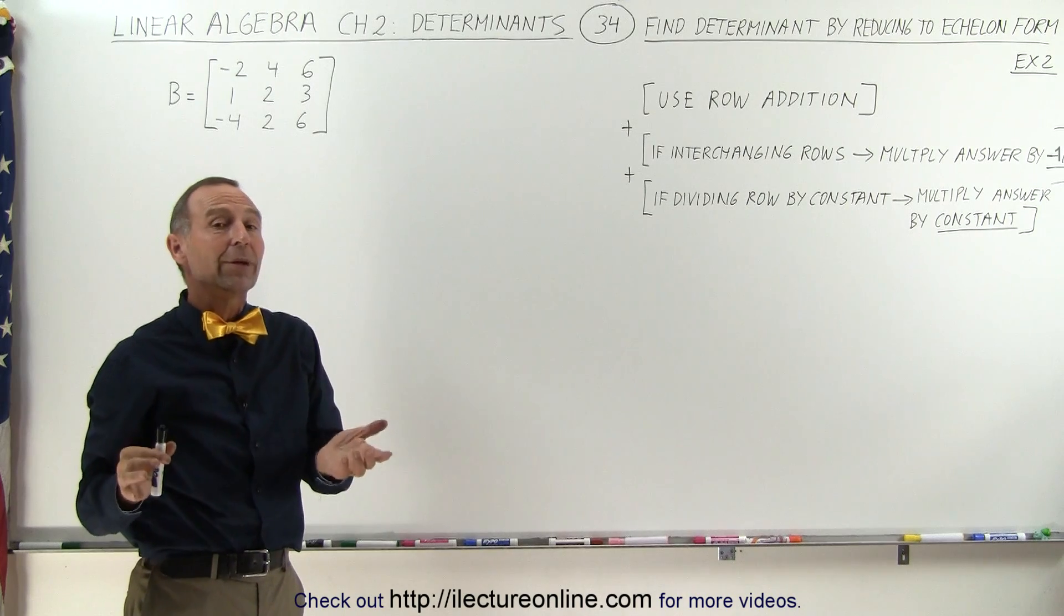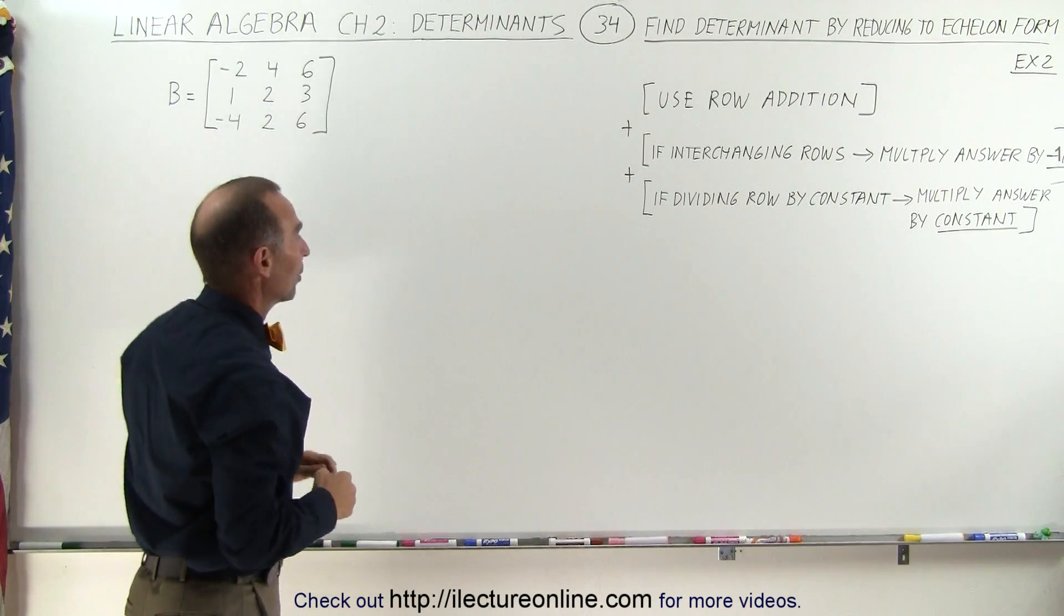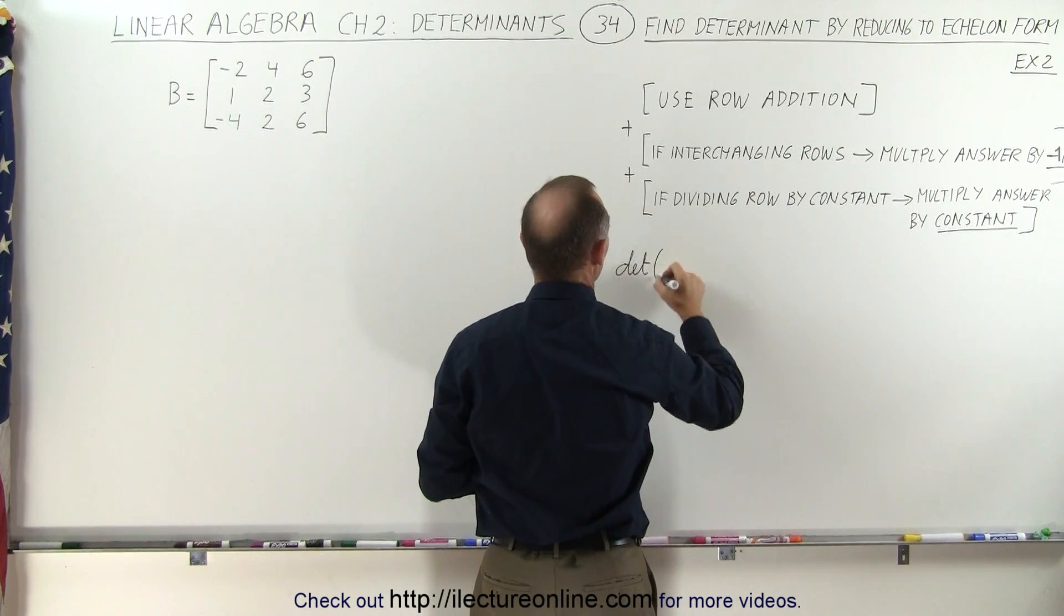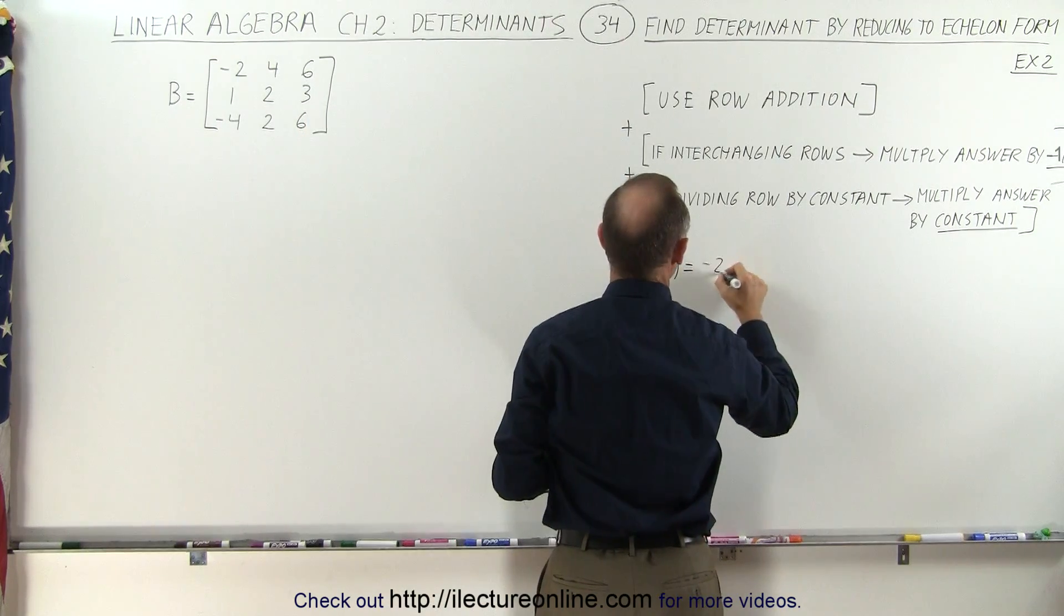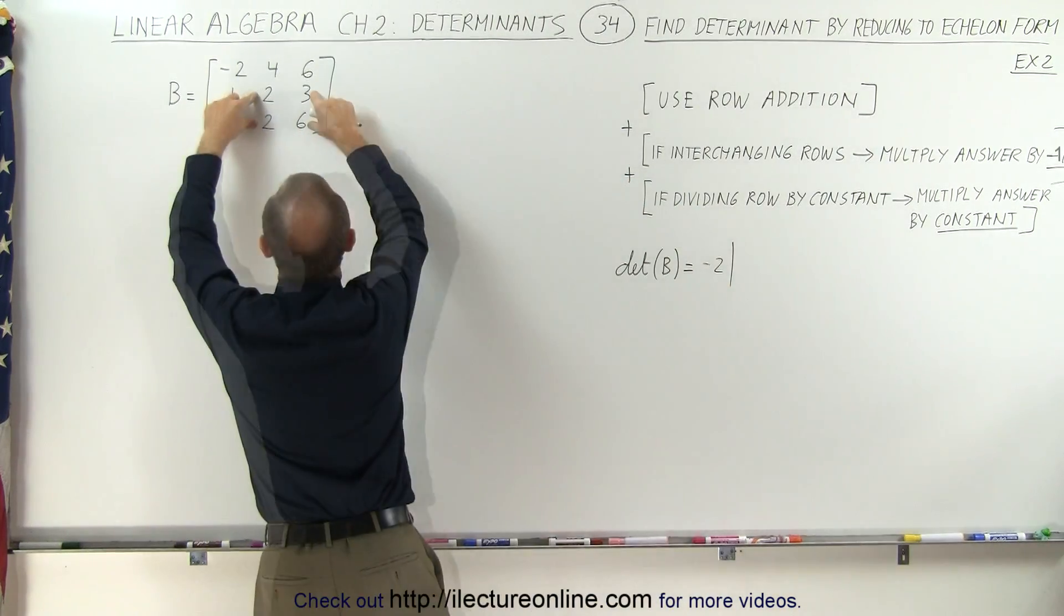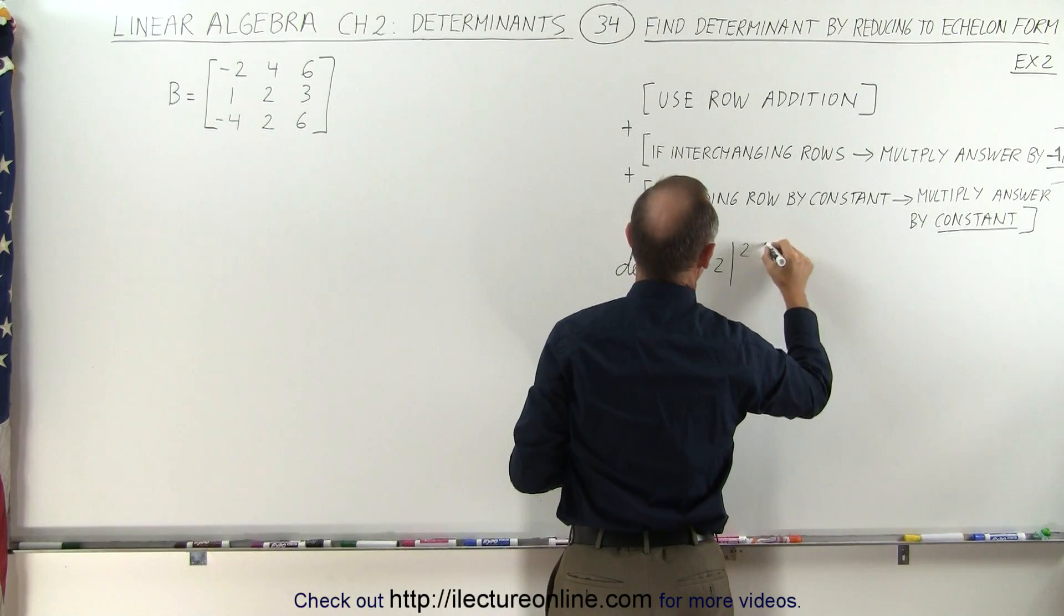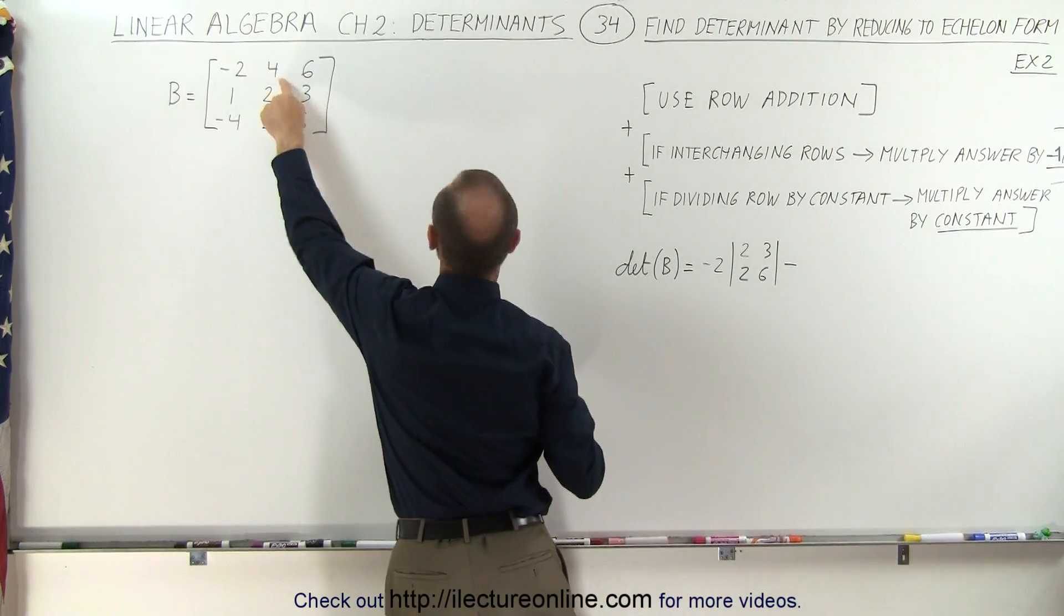To make sure we know what the answer is, let's go ahead and use the traditional method to find the determinant of B. Take the determinant of the matrix B, which is equal to the first element, minus 2, times the determinant of those four elements. That would be 2, 3, 2, 6, minus the second element, which is a 4.